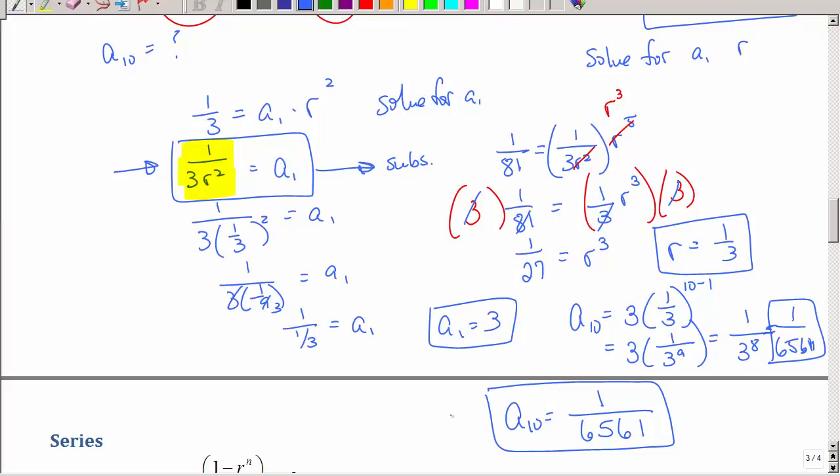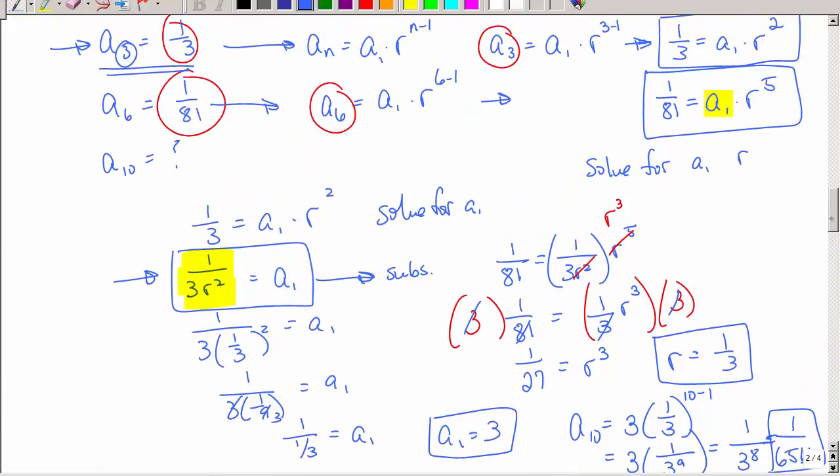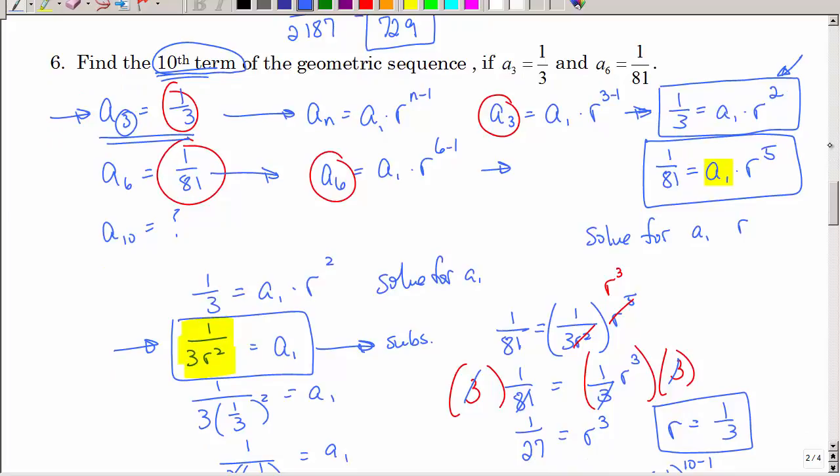Go through that problem again. A little bit slower. Pause. Rewind. And again, we're using a systems of equations. We're using the substitution method. Solving for r. Coming back. Getting a1. And then answering the question.